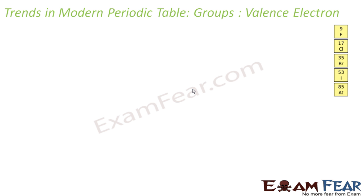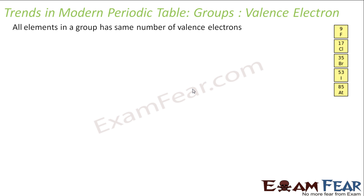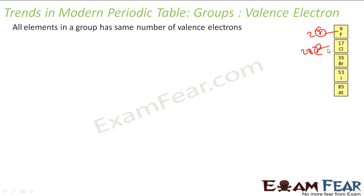We'll talk about the valence electrons. All the elements in this group have the same number of valence electrons. For example, this element has configuration 2, 7, and this one has 2, 8, 7 — so all of these are going to have 7 valence electrons in this case.